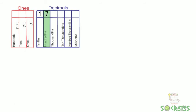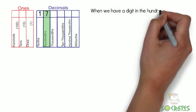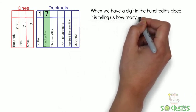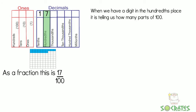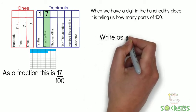0.17, when we have a digit in the hundredths place, it is telling us how many parts of 100. So as a fraction, it is 17 of 100, 17 over 100.